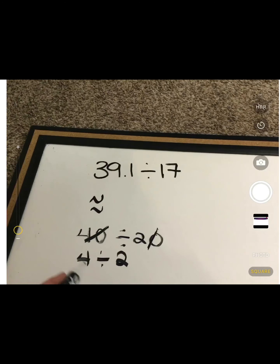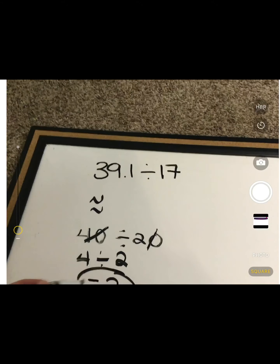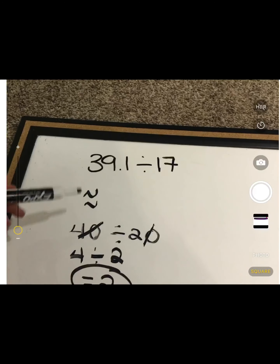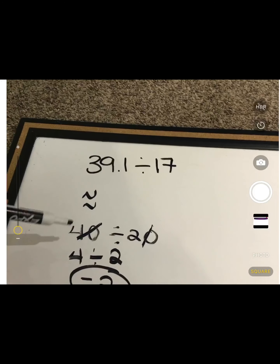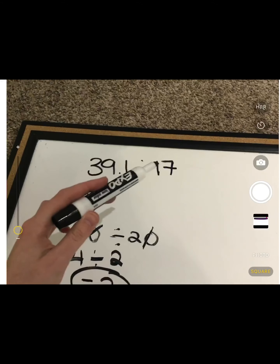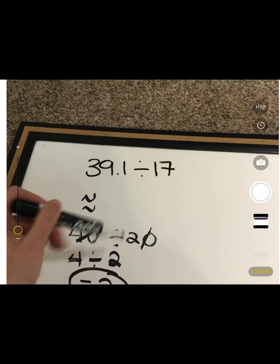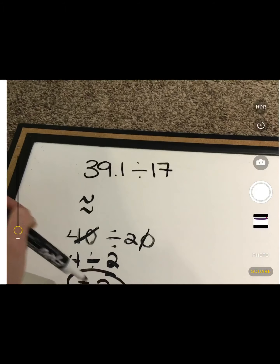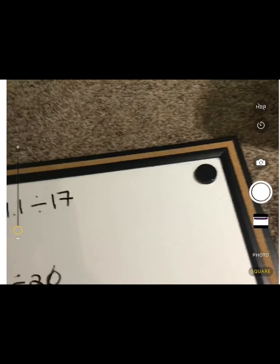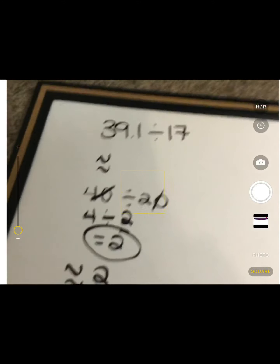Now we know 4 divided by 2 is going to give us 2. So I had 39 and 1 tenths — I would estimate that to 40. Then I estimated 17 to be around 20. And 40 divided by 20 is 2. So our estimated or approximate answer is going to be around 2.